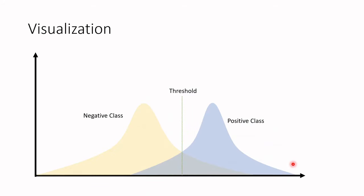Moving forward, we want to understand these definitions better through visualization. We'll take a look at two different visualizations. In the first one, we have two different distributions: the positive — people who have the disease — and the negative — people who do not have the disease.